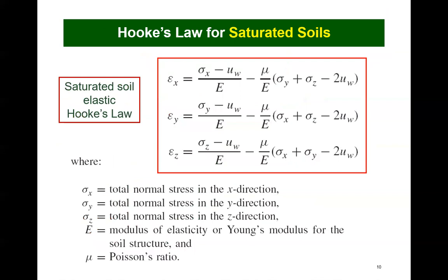As a reminder and a point of reference, let us review the form of the equation used for Hooke's Law for linear elastic behavior of a saturated soil. The soil is assumed to be isotropic and homogeneous. The longitudinal strain in each of the Cartesian coordinate directions is written in terms of changes in the stresses in all three coordinate directions. Young's modulus, or capital E, is the material property defining the relationship between stress and strain for each of the principal directions. Poisson's ratio, or mu (the Greek symbol mu), is used to define the effects of orthogonal directional stress changes.